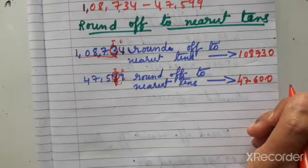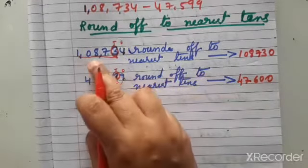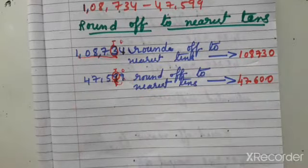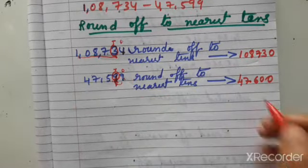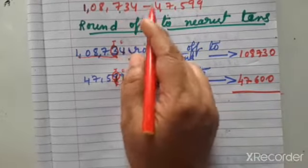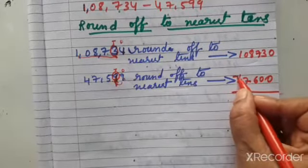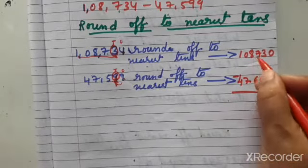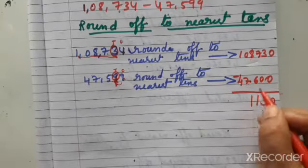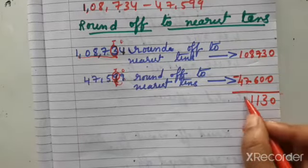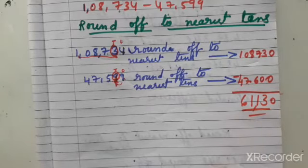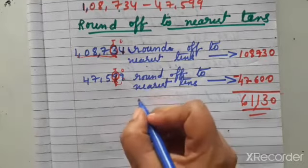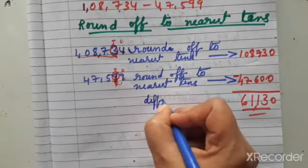So alternate method you can try. One lakh eight thousand seven hundred thirty four — numbers between, you have to check. Now there is a minus symbol, so we have to minus it. Seven minus six means one, eight minus seven means one, ten minus four means six. So sixty one thousand one hundred thirty is the answer. This is an estimated difference in tens place.